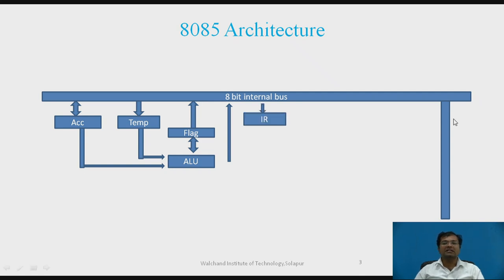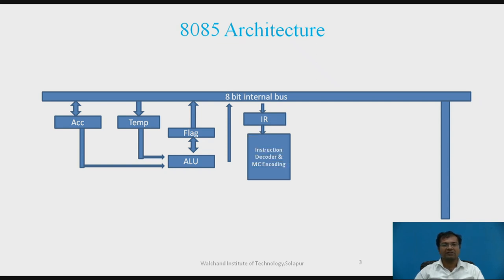Instructions are stored in memory. They are fetched and stored in the IR, which is the instruction register. After that, the instruction is forwarded to the instruction decoder and machine cycle encoding, where decoding of the instruction takes place.